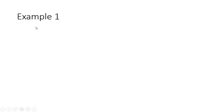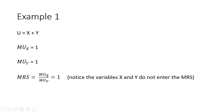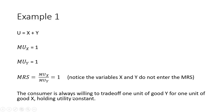Example one: utility equals x plus y. This is in the format of perfect substitutes. The marginal utility of x is just the value in front of x, which is one. The marginal utility of y is the value in front of y, which is also one. The marginal rate of substitution is just a ratio of these marginal utilities and equals one. Notice that x and y do not enter the marginal rate of substitution — it will always be constant. As an interpretation, the consumer is always willing to trade off one unit of good y for one unit of good x, holding utility constant.